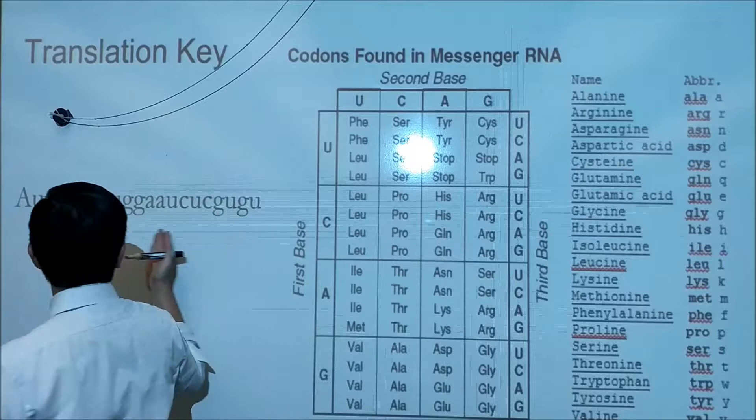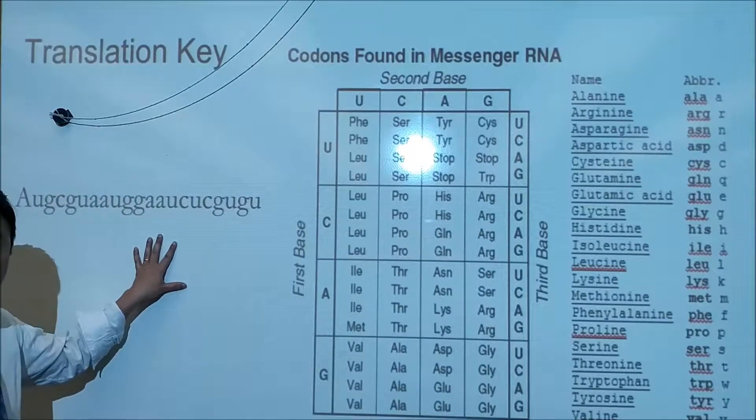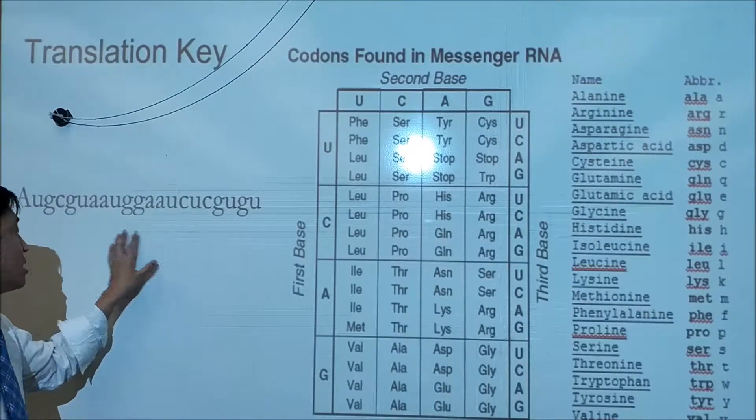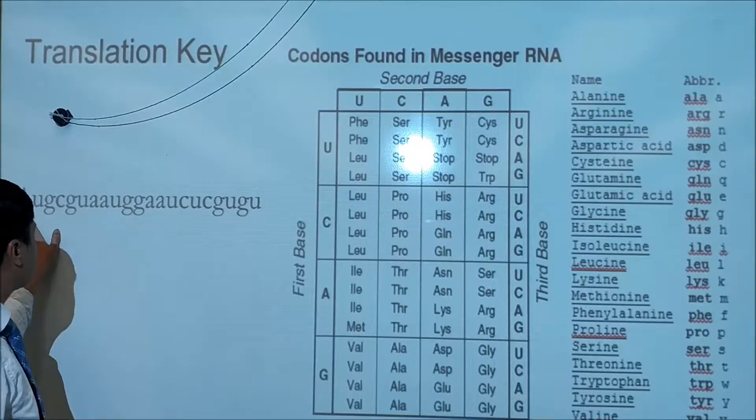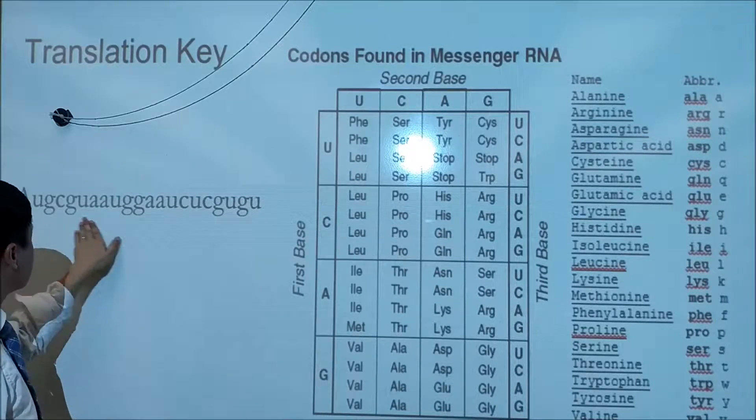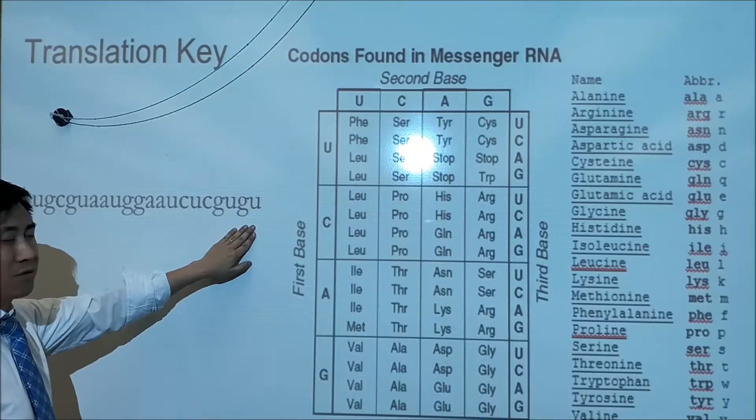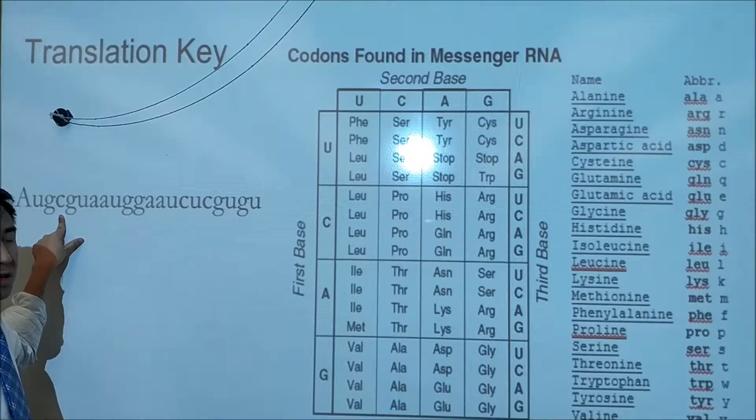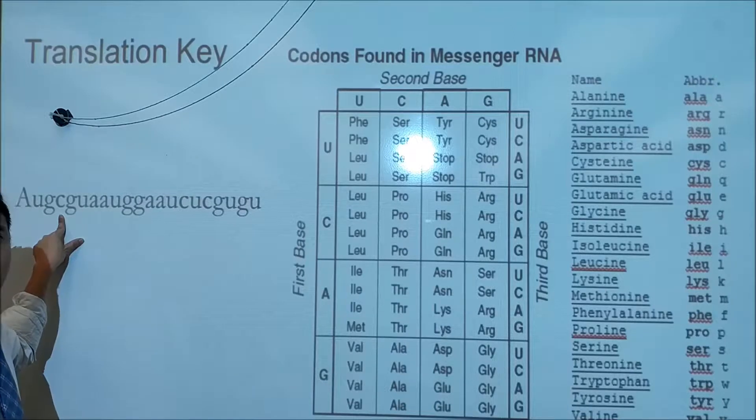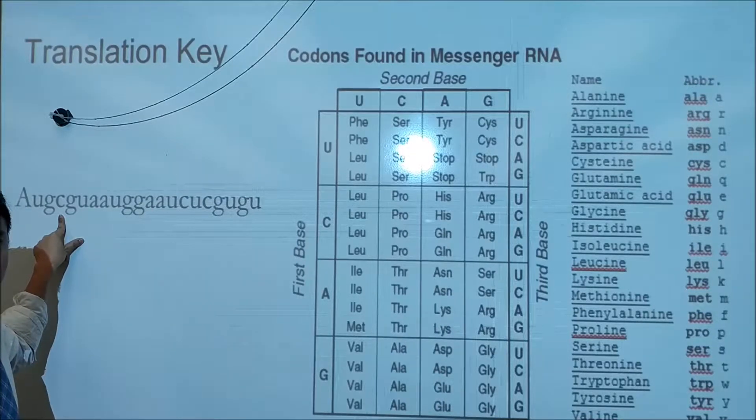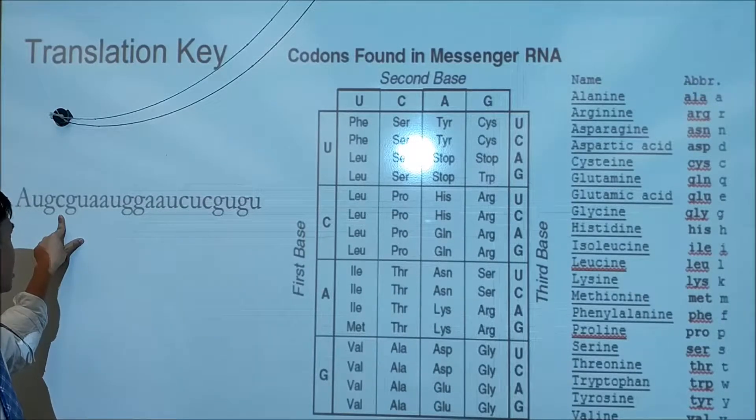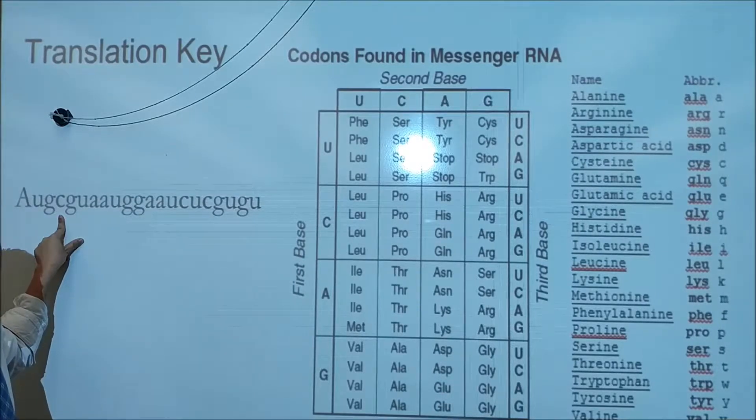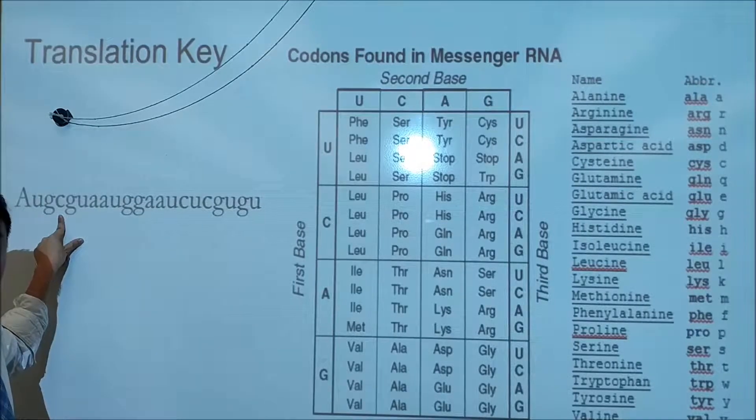This gobbledygook right here—there are six sentences on your sheet that look something like this. The first thing you should notice is that these messages are made of only four letters: A, U, G, and C. These correspond to the nitrogenous bases in RNA.